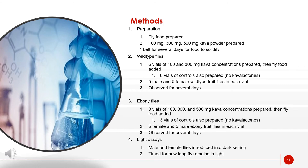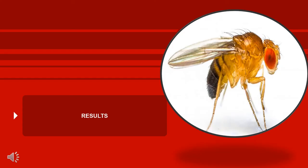For the light assay, male and female flies were introduced into dark settings and timed for how long the fly remained in light. Observations of wild type and ebony flies were made over a period of almost 30 days, while the light assay was conducted within a single day.